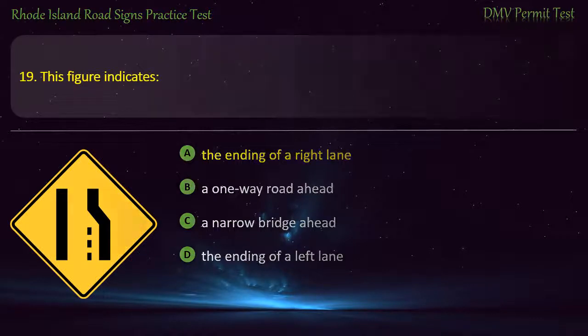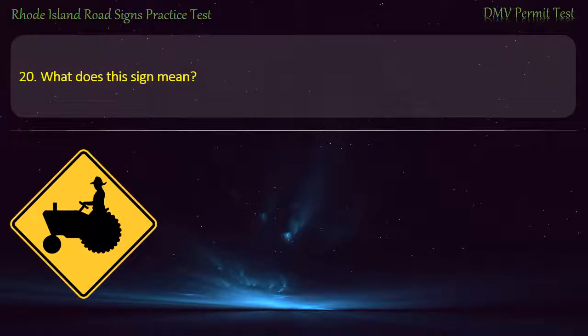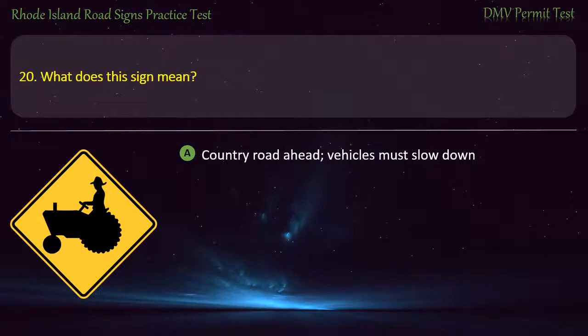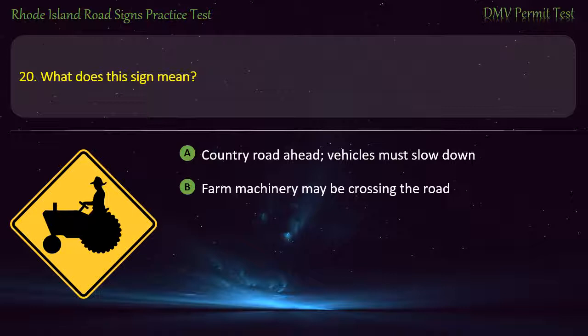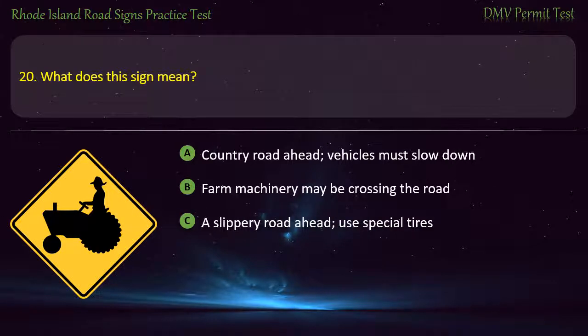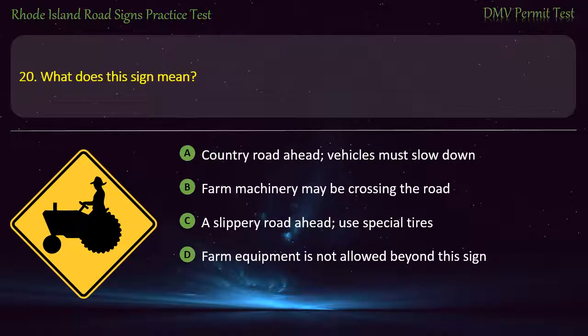Question 20. What does this sign mean? Country road ahead, vehicles must slow down, farm machinery may be crossing the road, a slippery road ahead — use special tires, farm equipment is not allowed beyond this sign. Answer: Farm machinery may be crossing the road.